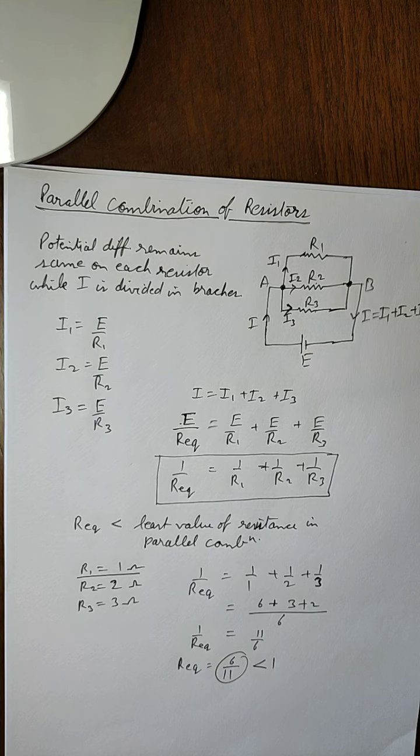So unlike series combination in which the R equivalent will be greater than the greatest value, in parallel combination R equivalent will be lesser than the least value of the combination.